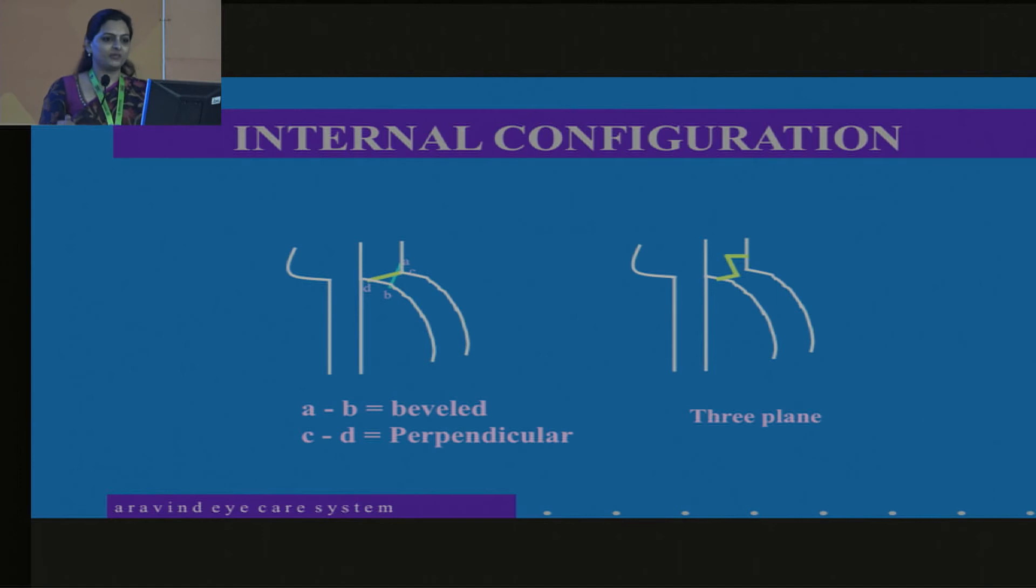Here we always prefer a triplanar incision as in the second picture. So it is a three-planar incision. The first plane, you make the tunnel groove. The second plane, you dip. And then the third plane, you go in with a keratome. So when you make a two-planar incision, bi-planar incision, you're not going to have good wound stability. And again, that is also going to induce some amount of astigmatism.